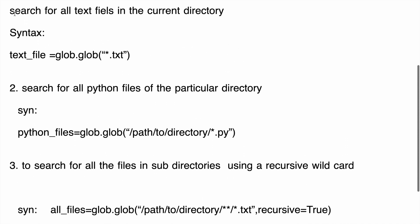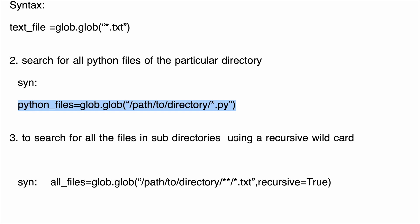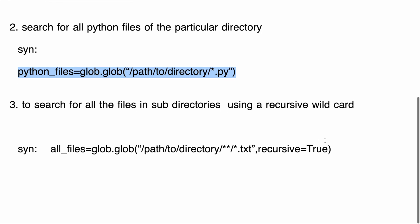So we have three syntaxes. The first uses '*.txt' to match all text files in the current directory. The second searches for Python files in a specified path. The third uses double star '**' with recursive=True to get all files, folders, and subdirectories.